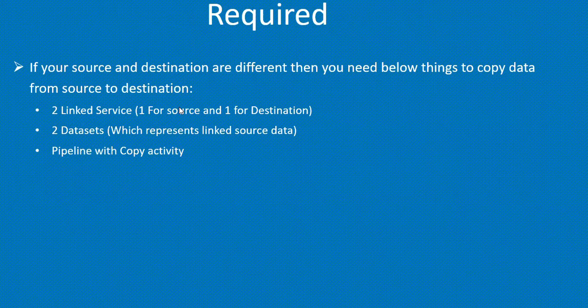A linked service is like a connection string which defines the connection information needed for the service to connect to external resources. A dataset represents the structure of the data within the linked data stores — it is a logical representation of your data that understands the format. The linked service defines the connection to the data source. Now we have a good idea of what a linked service and dataset are.